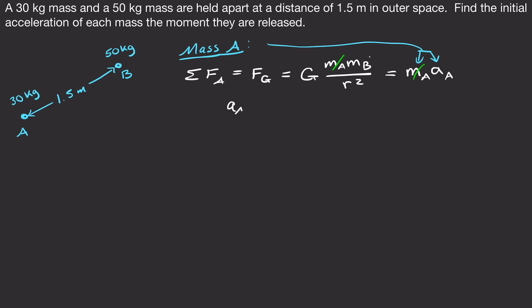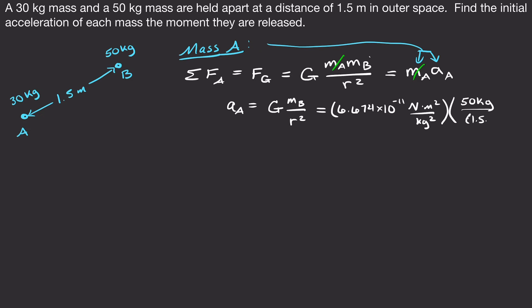Plugging in: G = 6.674 × 10⁻¹¹, mass B = 50 kg, distance = 1.5 meters squared. The result is 1.48 × 10⁻⁹ m/s². Because G is such a small number, it shows how weak gravity is — even two masses close together barely accelerate.